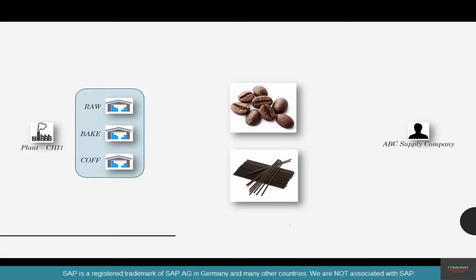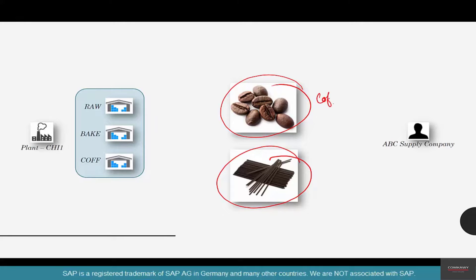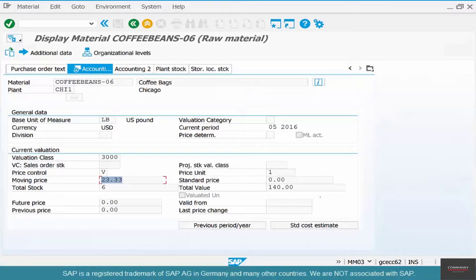What we're going to do is procure both stock materials and non-stock materials in the same order and see how they are different. We have created a material called coffee beans 06, and to order stirrers we need to create stirrers first.